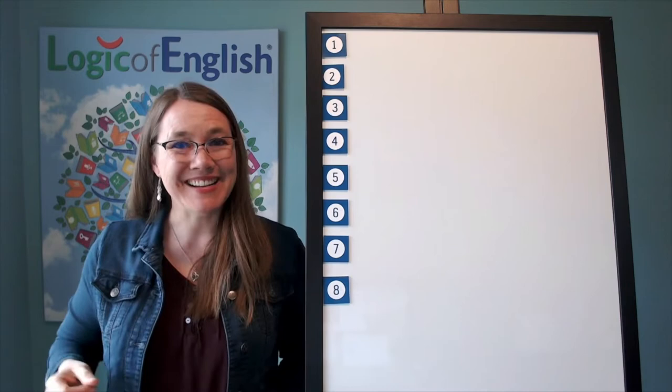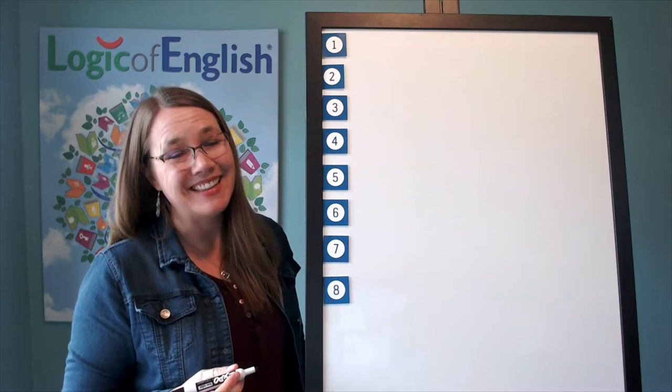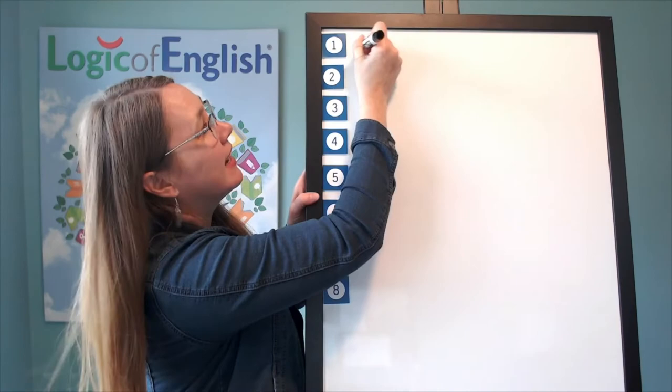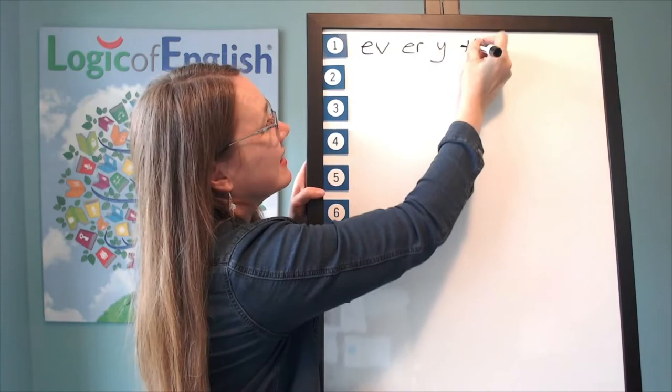You've got it. Just sound it out as you write it, sounding it out loud so that I can hear you. Ev, er, e, thing. Good. Help me to write it. The first syllable is ev, v. The second syllable is er. The third syllable is e.